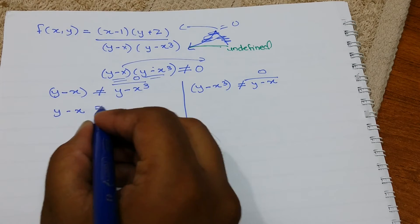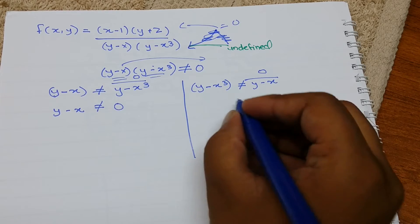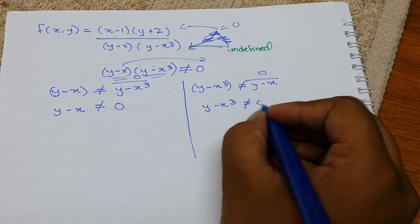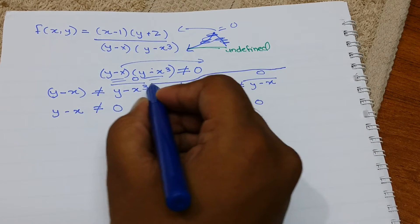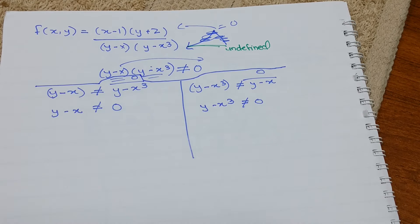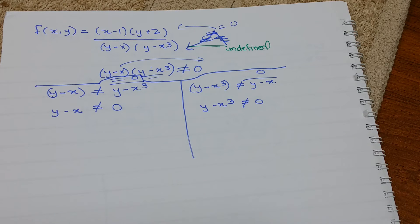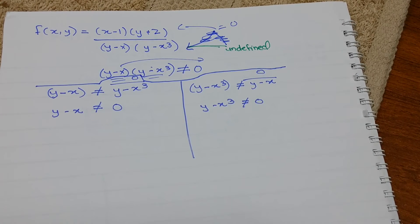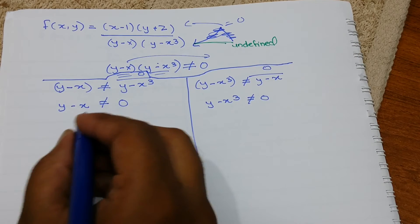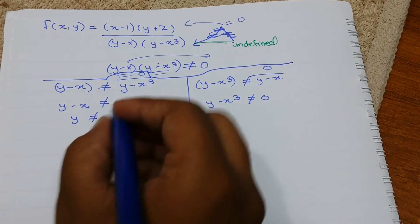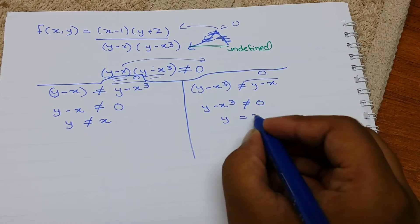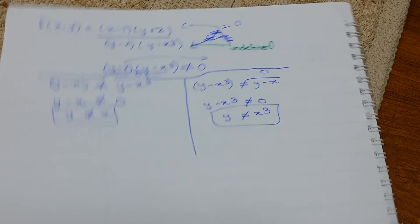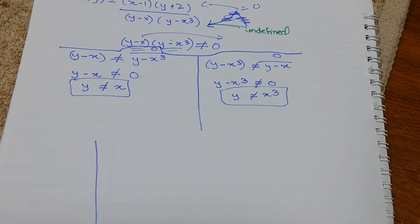So our next step would be y-x ≠ 0 and (y-x³) = 0. What I'm going to do now is I'm going to send this x on the right side and I'll do the same with this one. So these two are my temporary answers.